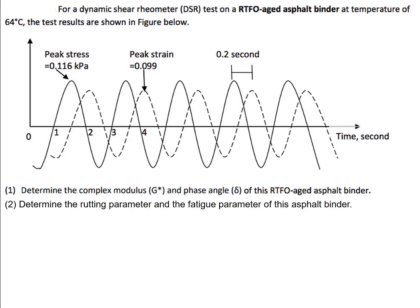Let's see how to solve a sample problem. For a dynamic shear rheometer test on an RTFO-aged asphalt binder at a temperature of 64 degrees Celsius, the test results are shown in this figure. The solid line represents the applied shear stress, and the dashed line is the resulting shear strain. The peak stress tau max is 0.116 kPa, the peak strain gamma max is 0.099, and the time lag is 0.2 seconds. Determine the complex shear modulus G* and phase angle delta, as well as the rutting parameter and the fatigue parameter.